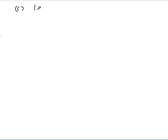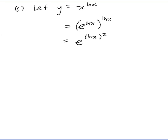On to part c: let y be equal to x to the power of ln x. I don't know how to deal with that directly, so I'll convert to e. That would be e to the ln x, all to the power of ln x — the e and ln cancel out to give x to the power of ln x — which equals e to the power of (ln x) squared.